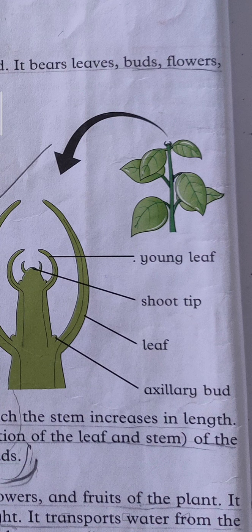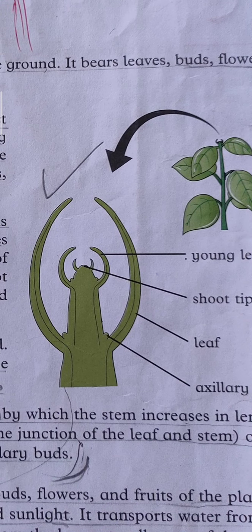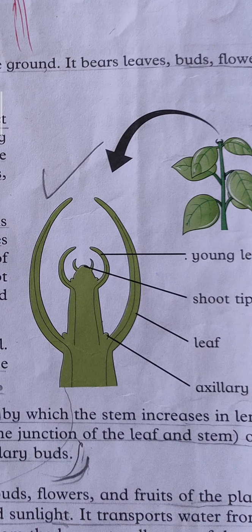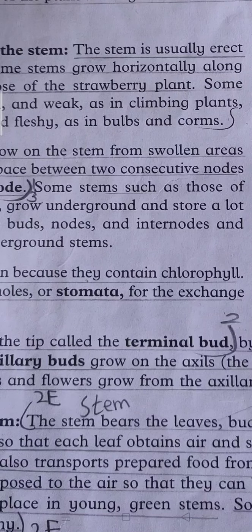They also have tiny holes or stomata for the exchange of gases. The upper side has the wax cuticle, which is properly coated. The side of the leaves has the stomata. This means the exchange of gases. Carbon dioxide comes from inside, oxygen comes out. A stem has a bud at the tip called terminal bud.